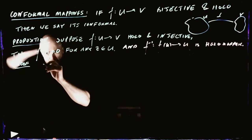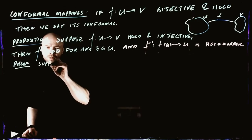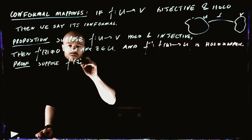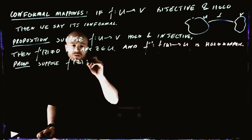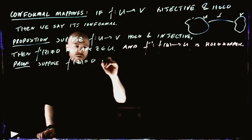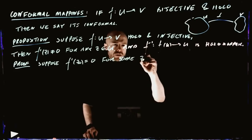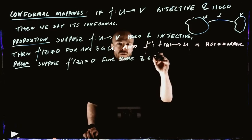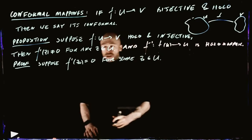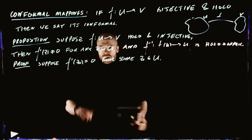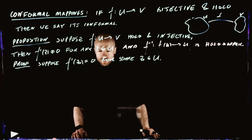Suppose that we have that F'(Z0) is actually equal to 0 for some particular point Z0 belonging to our set U. What kind of structure can F have around Z0? How can this happen?